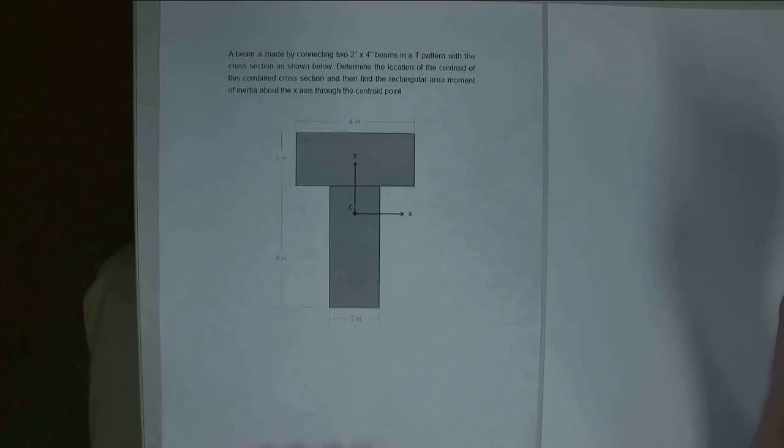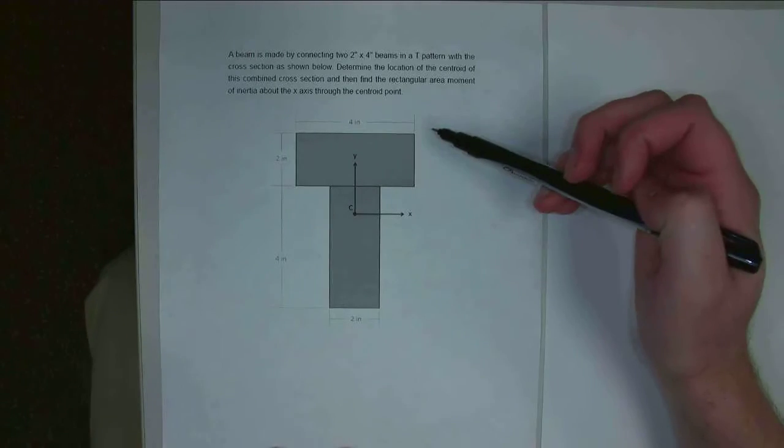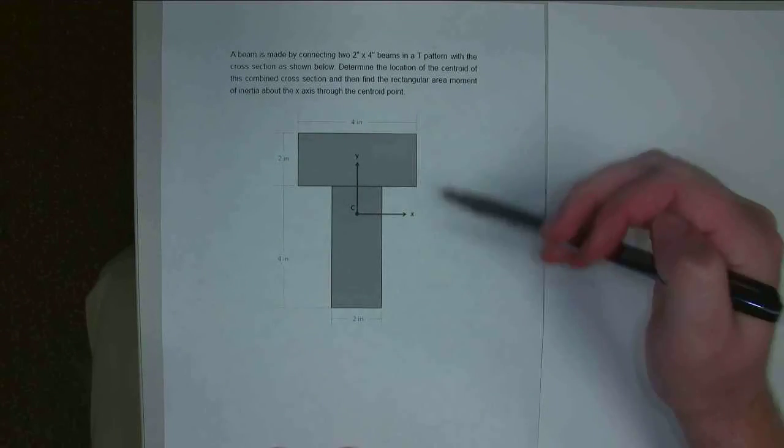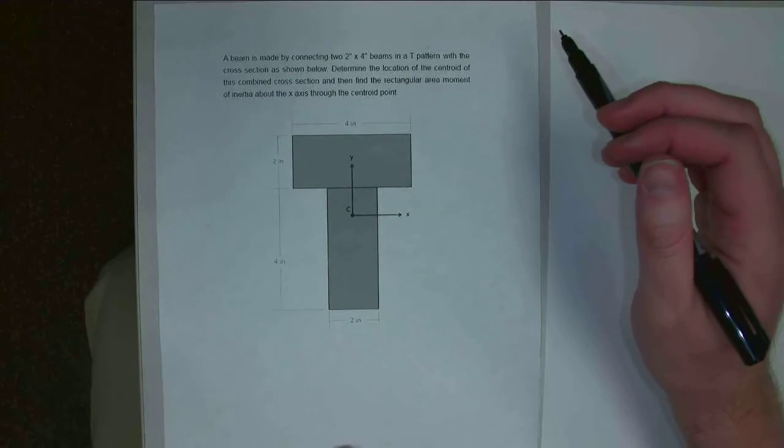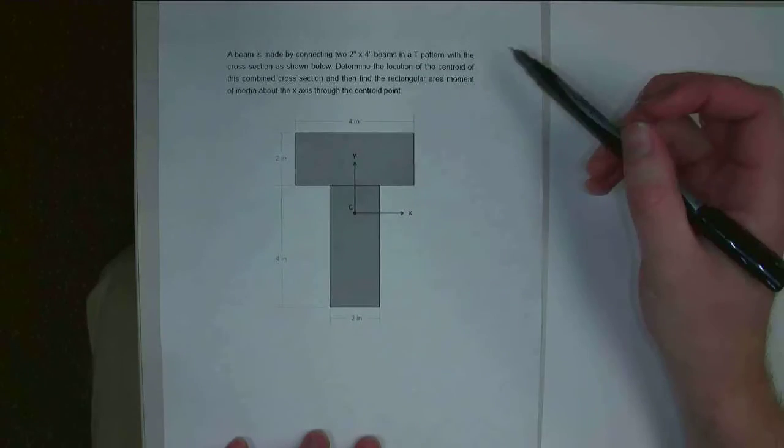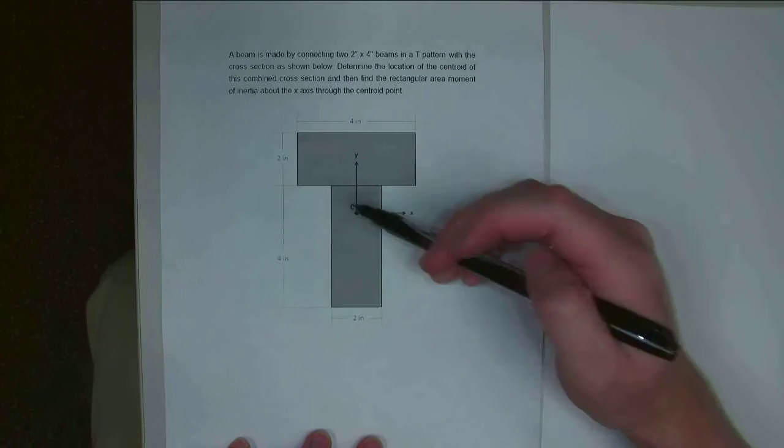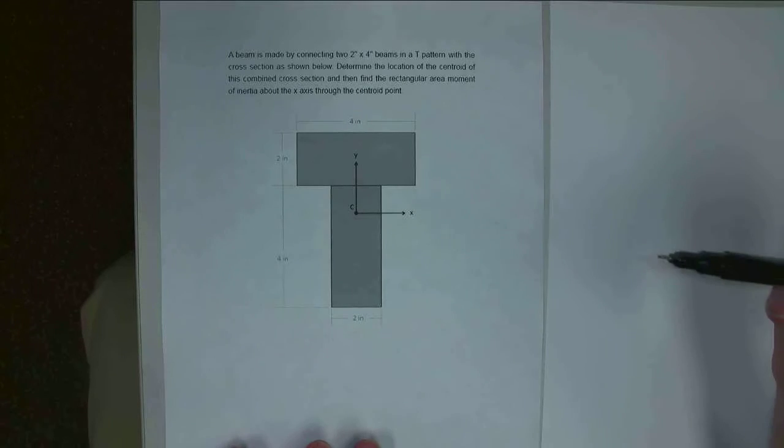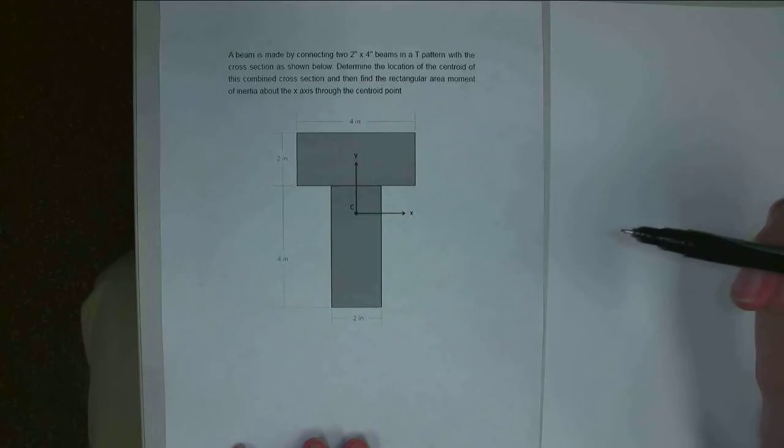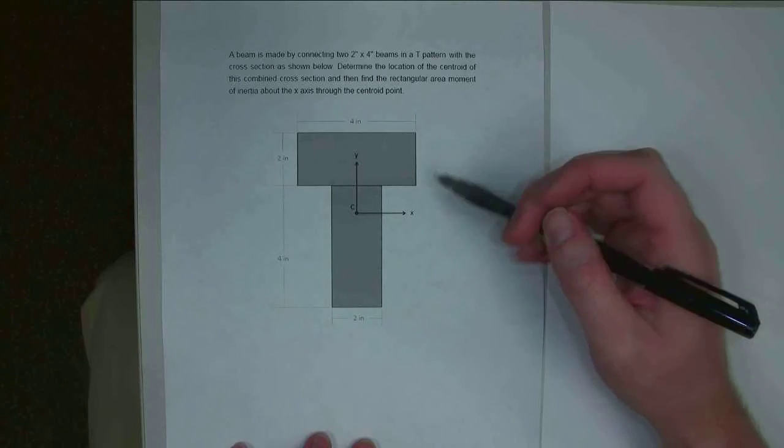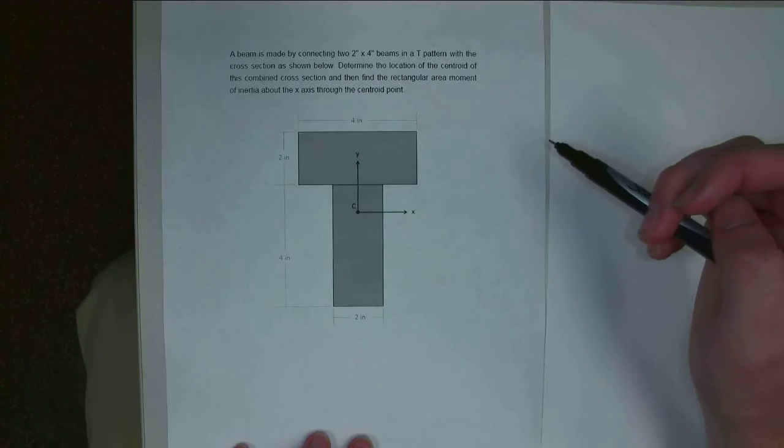Hello. In this video, we have a beam that is made by connecting two 2 inch by 4 inch beams in a T pattern as shown here below. We are asked to determine two things. First of all, we're asked to determine the location of the centroid of this kind of T shape. And then furthermore, we are asked to find the rectangular area moment of inertia, so Ixx, about this combined centroid.